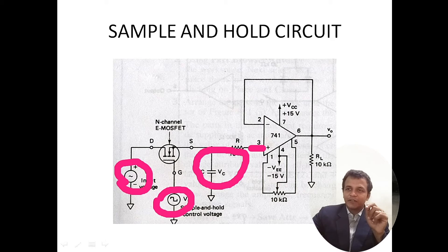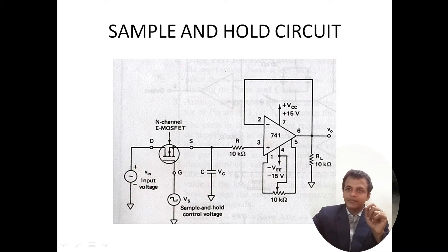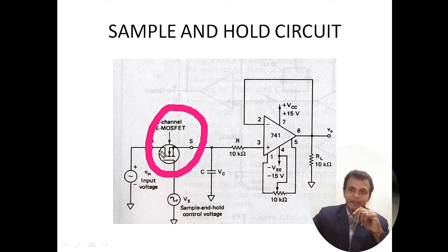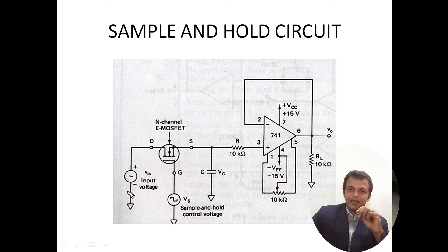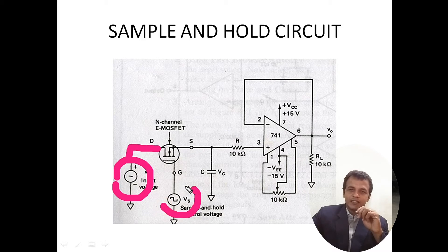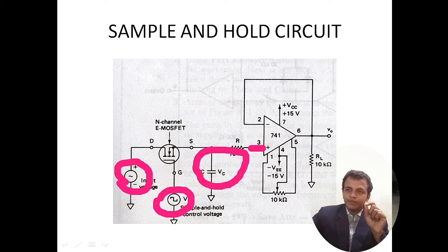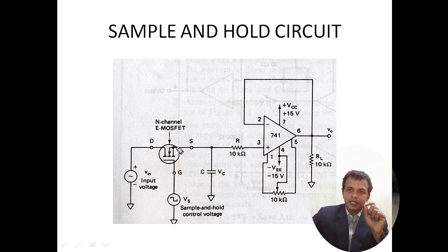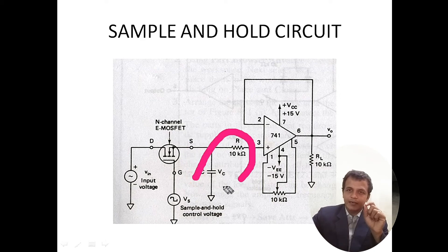One more important active device that performs switching operation available here is an N-channel enhancement type MOSFET — metal oxide semiconductor field effect transistor, also called N-channel E-MOSFET. The input signal which has to be sampled is given to the drain of the E-MOSFET. The control voltage, which is a pulse waveform that controls the time period for sampling and holding operation, is given to the gate of the E-MOSFET. The signal coming from the source terminal of the E-MOSFET is connected to the non-inverting terminal of the operational amplifier through the capacitor and resistor arrangement.